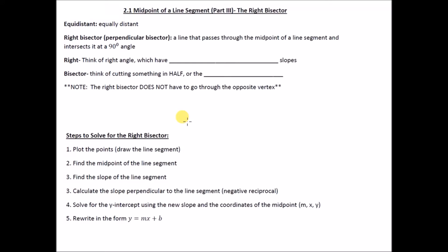2.1 midpoint of a line segment — this time we're going to talk about the right bisector. When I say the word equidistant, this means equally distant. The right bisector is also called the perpendicular bisector. When I think of the word 'right,' I think of two lines that meet at 90 degrees, and when I think of 'bisect,' I think of the midpoint or the middle.